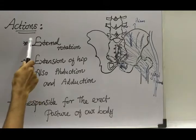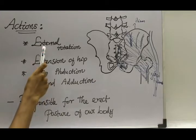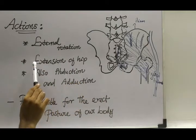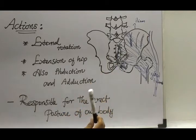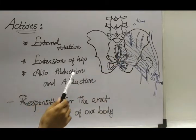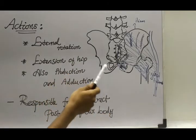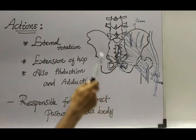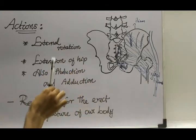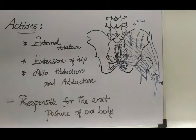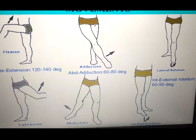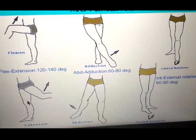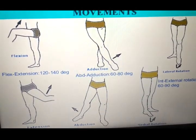Now we'll see the actions of the gluteus maximus muscle. It performs external rotation of the hip joint, and extension of the hip — which is the main function of this muscle. It also performs abduction and adduction movements. As mentioned earlier, it is responsible for the erect posture of our body. So the four movements are: lateral rotation, abduction, adduction, and extension — all done by the gluteus maximus muscle.